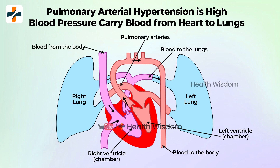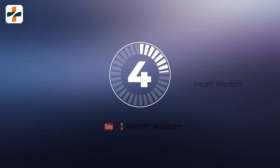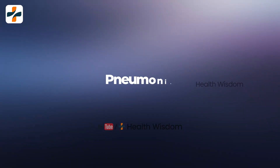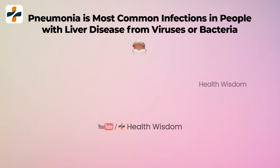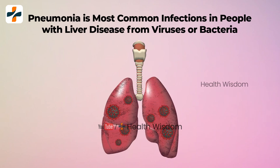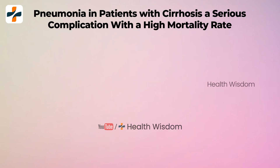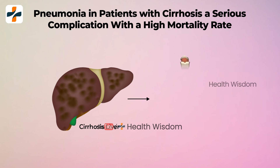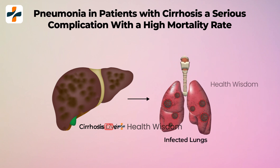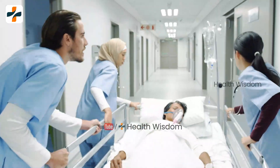4. Pneumonia. Pneumonia is one of the most common infections in people with liver disease. It is usually caused by an infection from viruses or bacteria. Some research has found that the prevalence of pneumonia in people with cirrhosis has been reported as high as 21.4%.